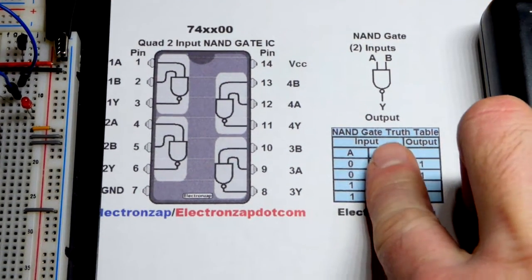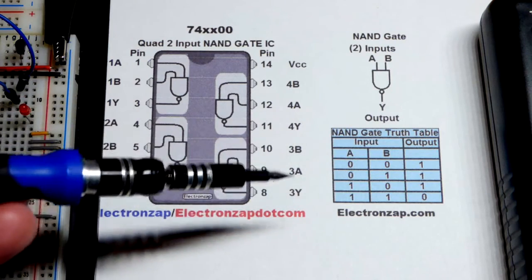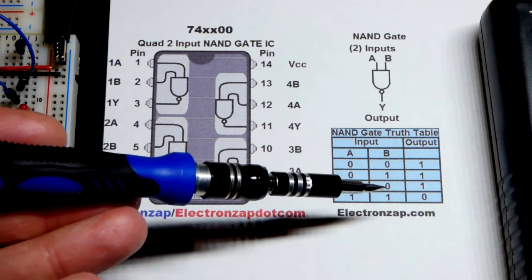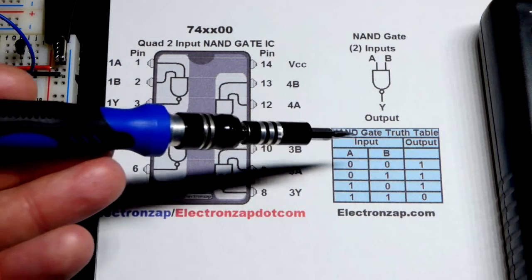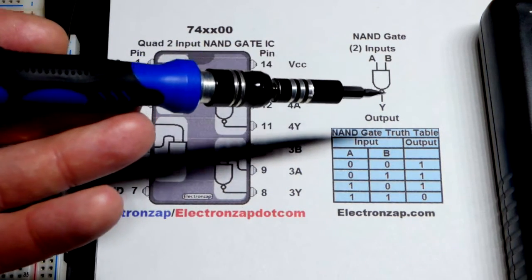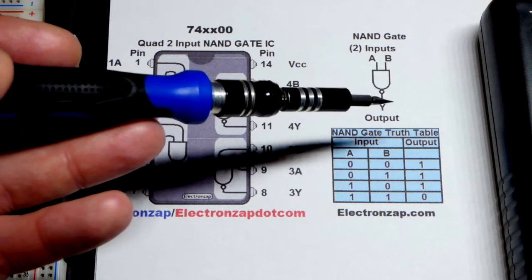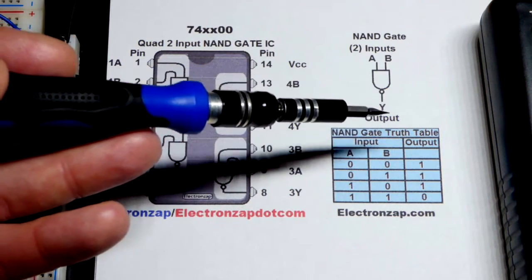So what the NAND gate does is unlike the AND gate where you need all the inputs high for the output to be high, the NAND gate, the output is inverted. You can see the little dot there. There's the AND gate schematic symbol for the AND logic gate and there's a little dot to indicate the output's inverted.